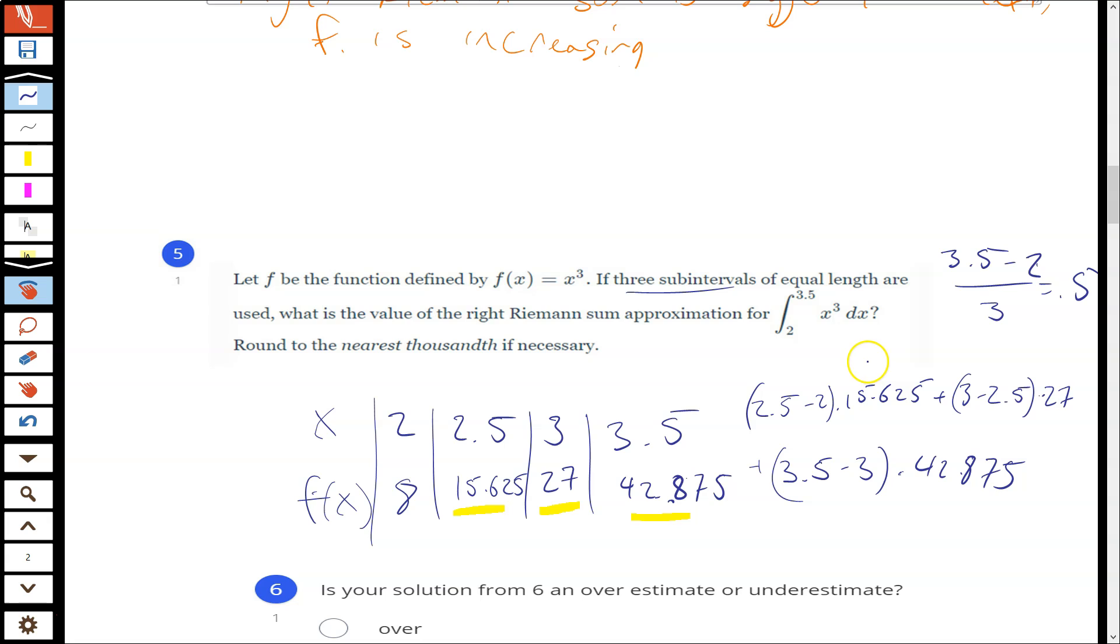Then I'm just going to do the math here. This is a calculator problem. Make sure you use parentheses. You can also, this is actually easier, you can factor out that 0.5 and then just do 0.5 times the sum. That's why it's useful to use subintervals of equal length. So I get 42.75 here.